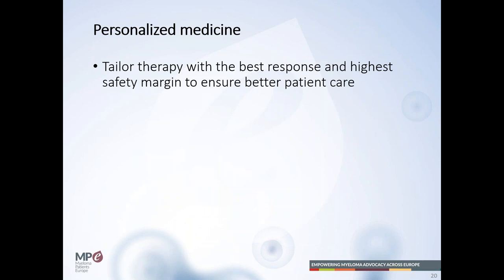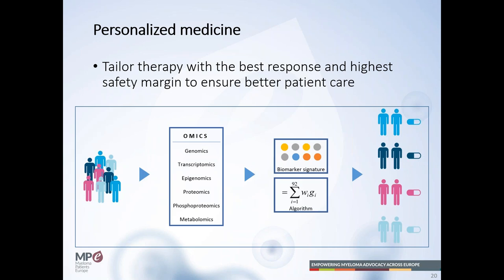What we want to do in the future is go towards personalized medicine — to tailor therapy so patients achieve the best response, receive a safe therapy, and maintain a good quality of life. We now have all kinds of features to look at: genomics, gene expression, protein expression, and plasma cell features that confer prognosis. With a biomarker signature and gene expression profiling, we can develop an algorithm to help characterize patients' myeloma and treat according to those differences.